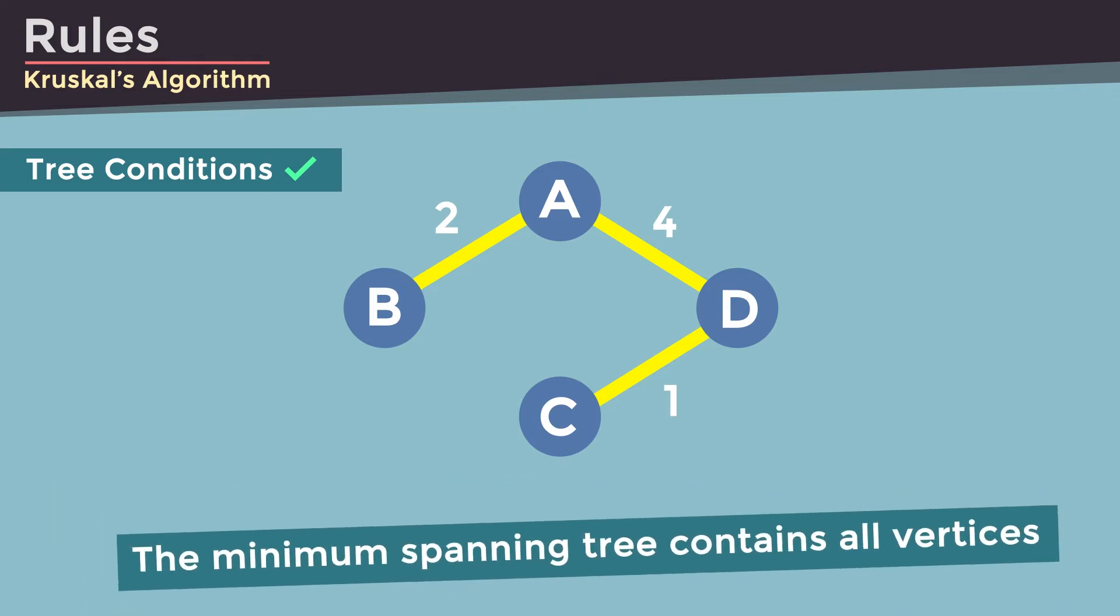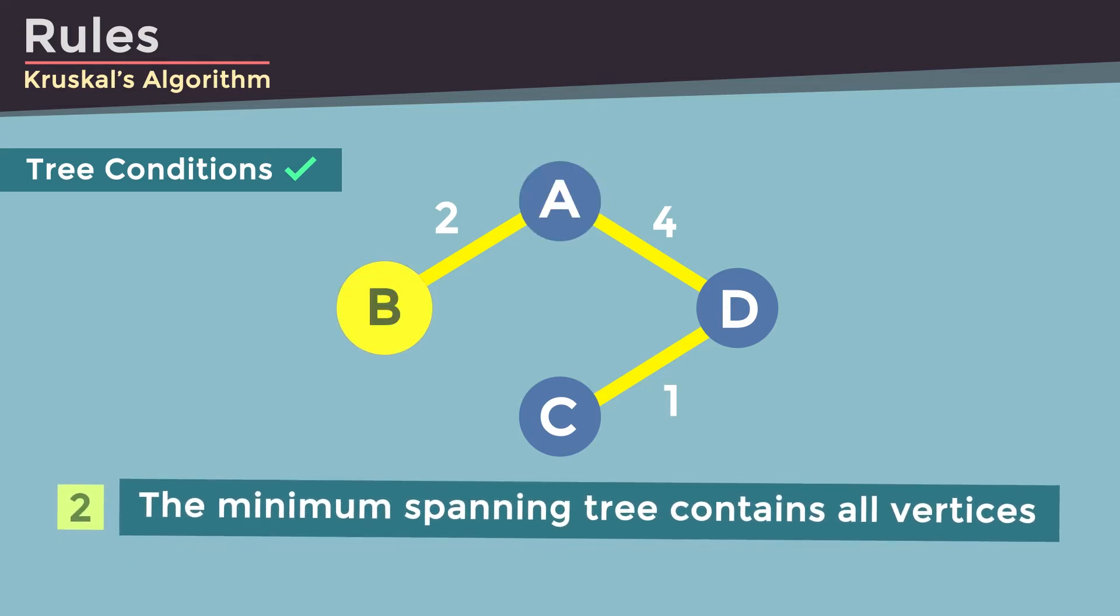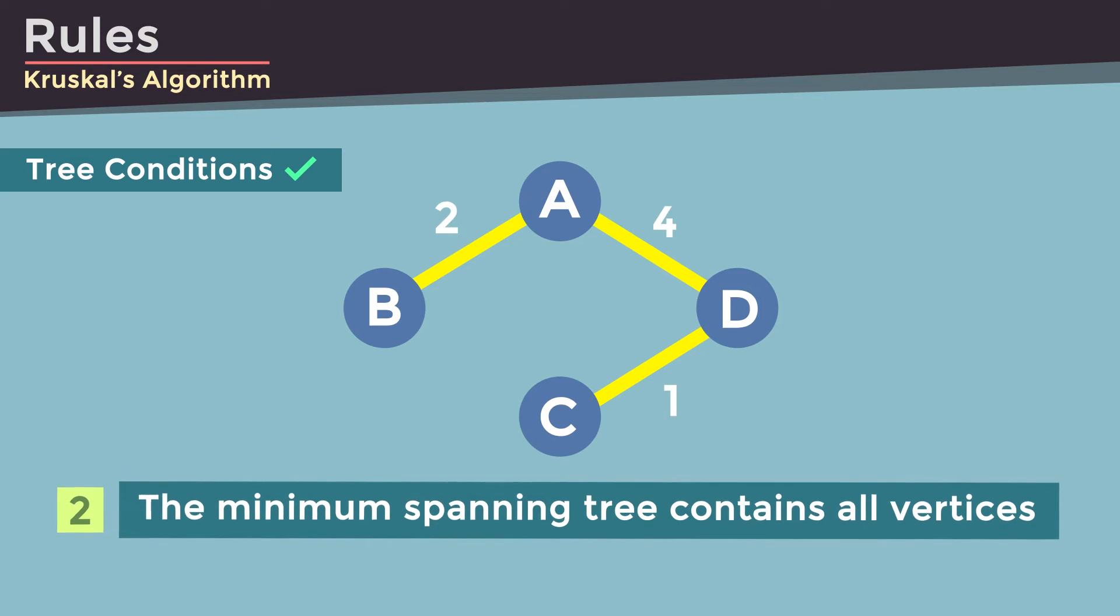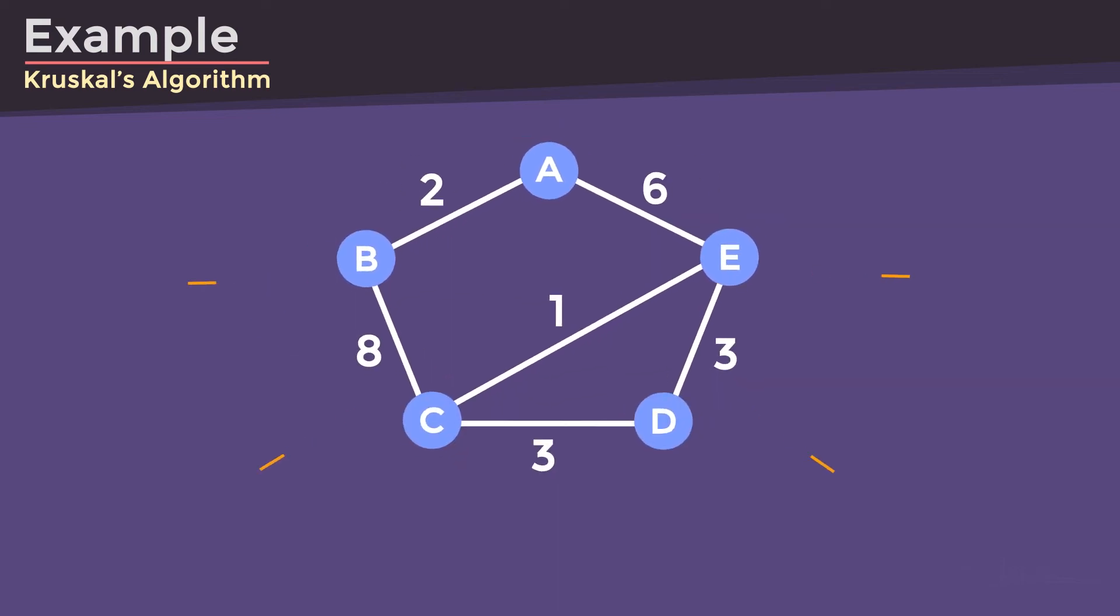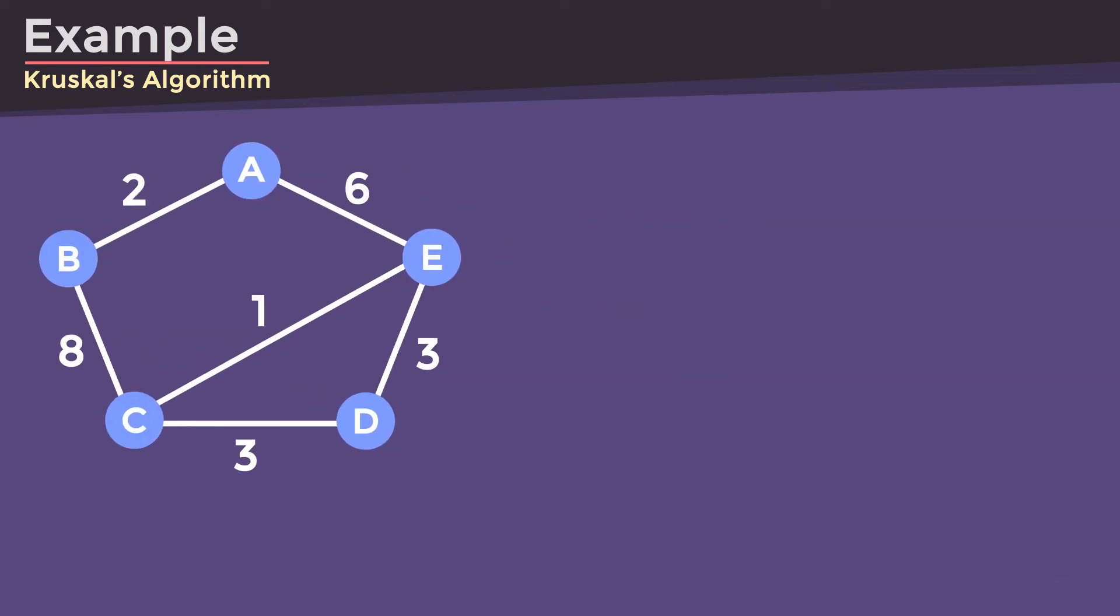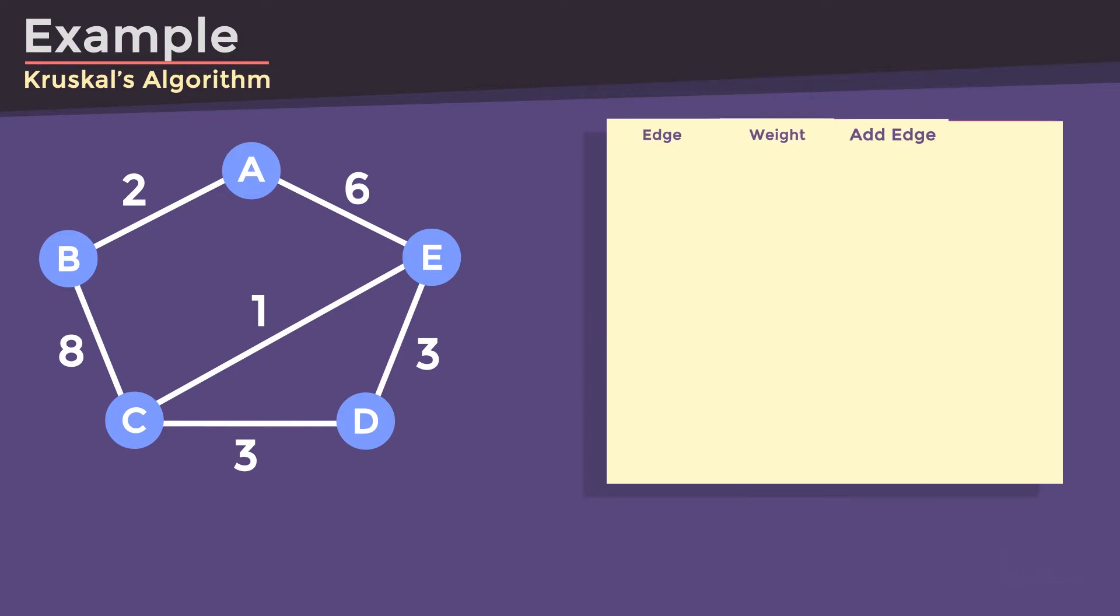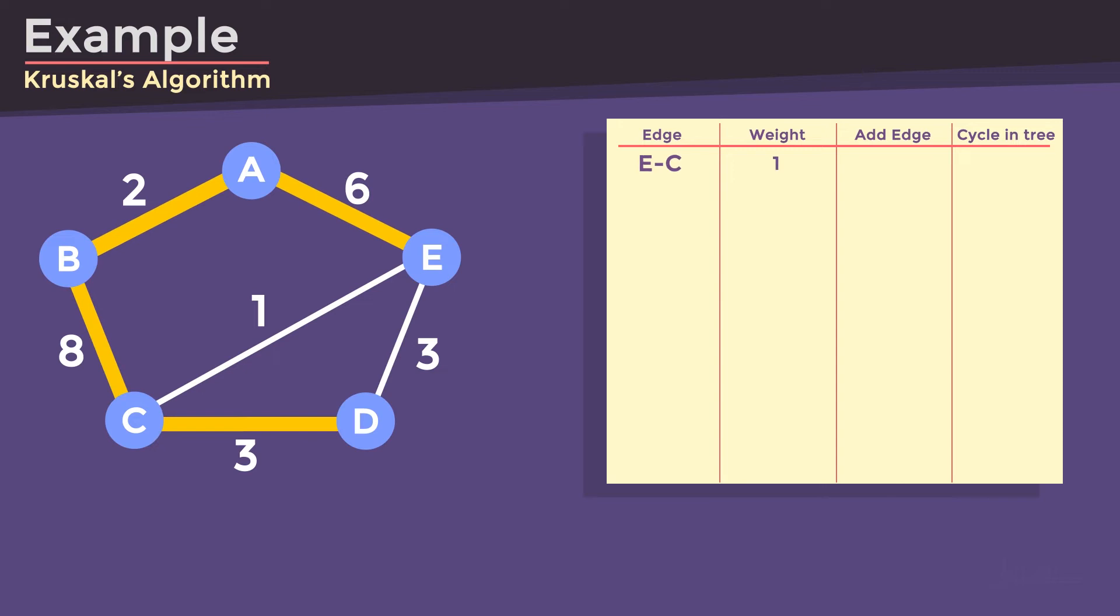The second one is that the minimum spanning tree contains all vertices. So, let's dive into an example. Suppose we are given this graph. The first step that you need to take is to sort all edges in non-decreasing order of their weight value.